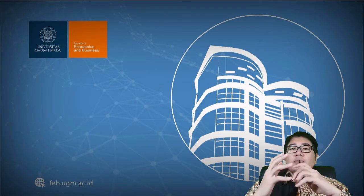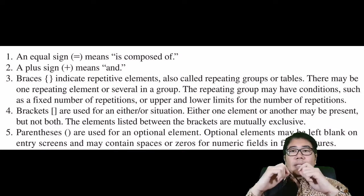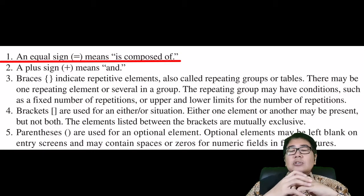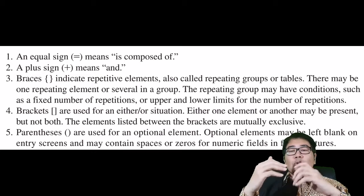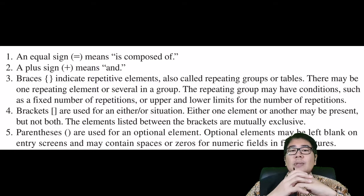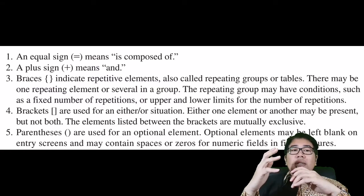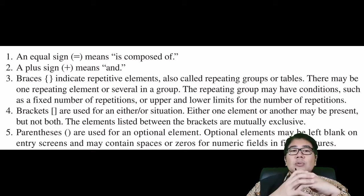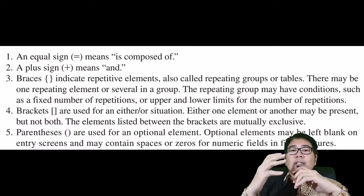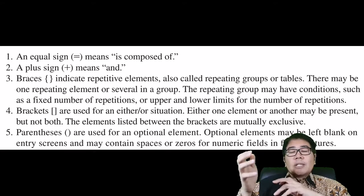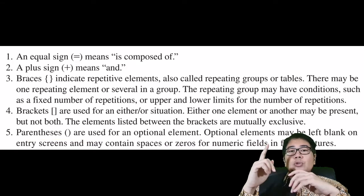The descriptions of the data structure are described in a structured format with the following notations. The first is an equal sign, which describes the contents of an entity consisting of several attributes. The second one is a plus sign, to describe a series of attributes belonging to a particular entity. The third one is with braces, to describe elements whose values are repetitive. The fourth uses a bracket sign for alternative values — for example, alternative A or alternative B. And the fifth one is with a parenthesis sign, to describe elements whose values are optional.